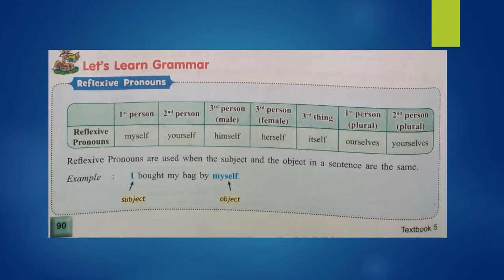Now look at the table. There are different reflexive pronouns. 'Myself' is the first person reflexive pronoun used for 'I'. 'Yourself' is used for 'you'. 'Himself' is the third person reflexive pronoun used for 'he'. 'Herself' is used for 'she'. 'Itself' is used for third person singular, that is 'it'. 'Ourselves' is used for first person plural, that is 'we'.